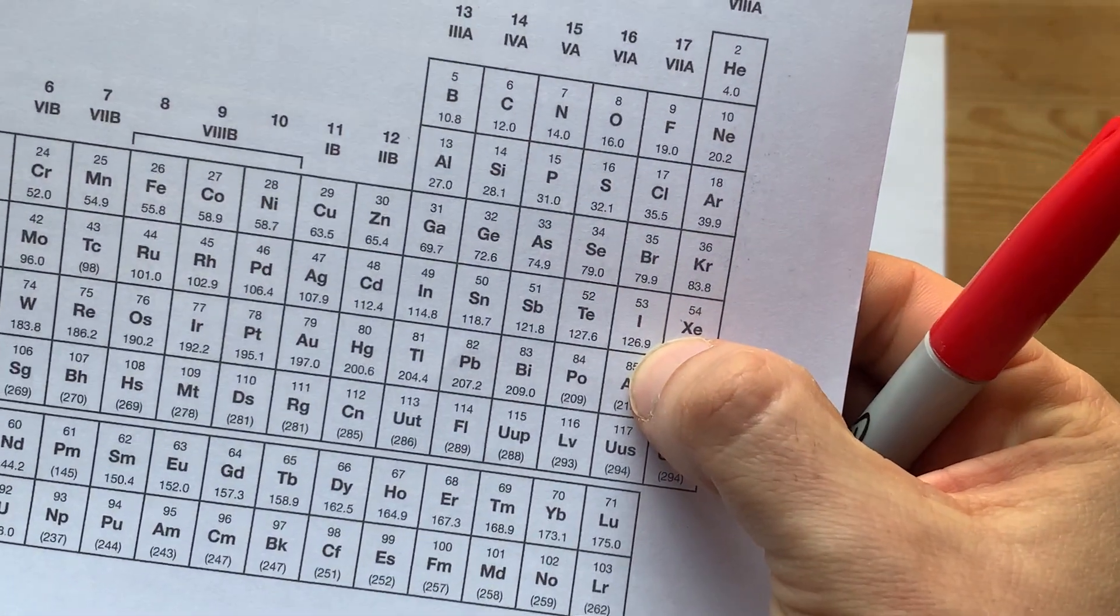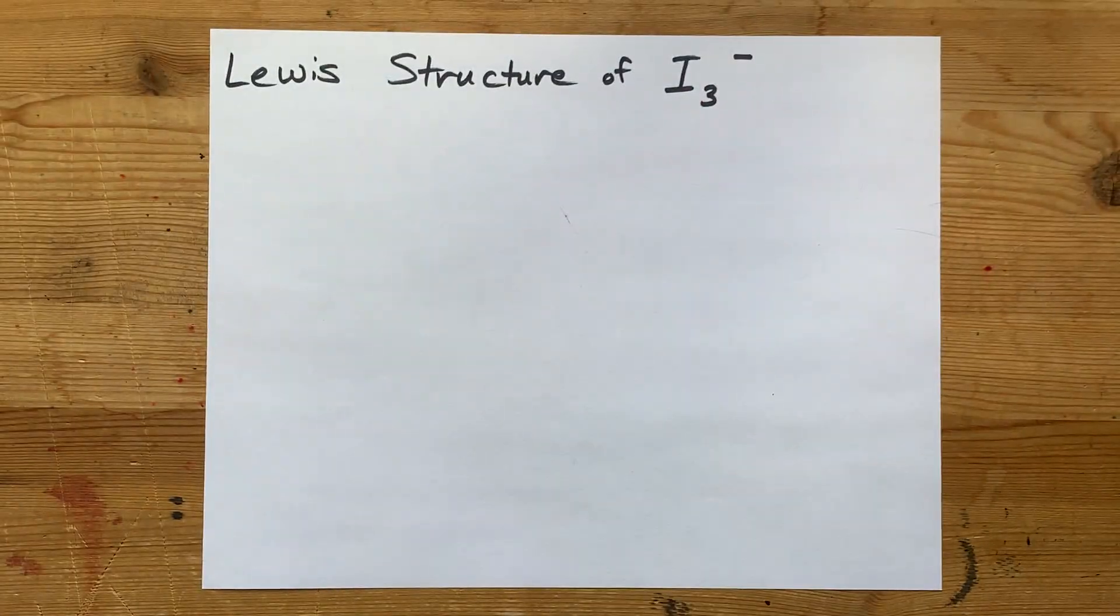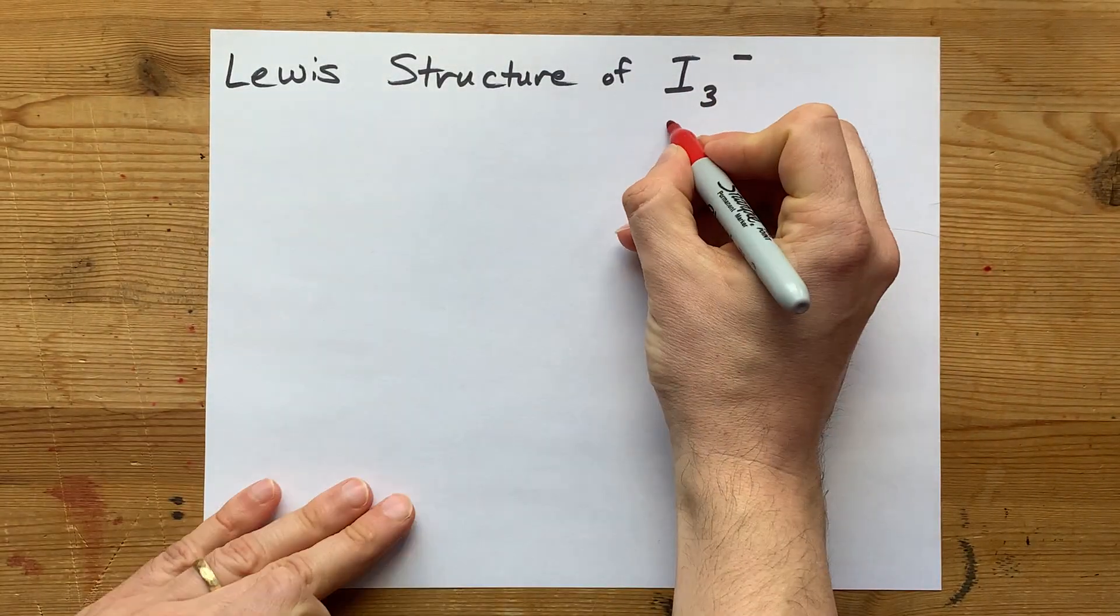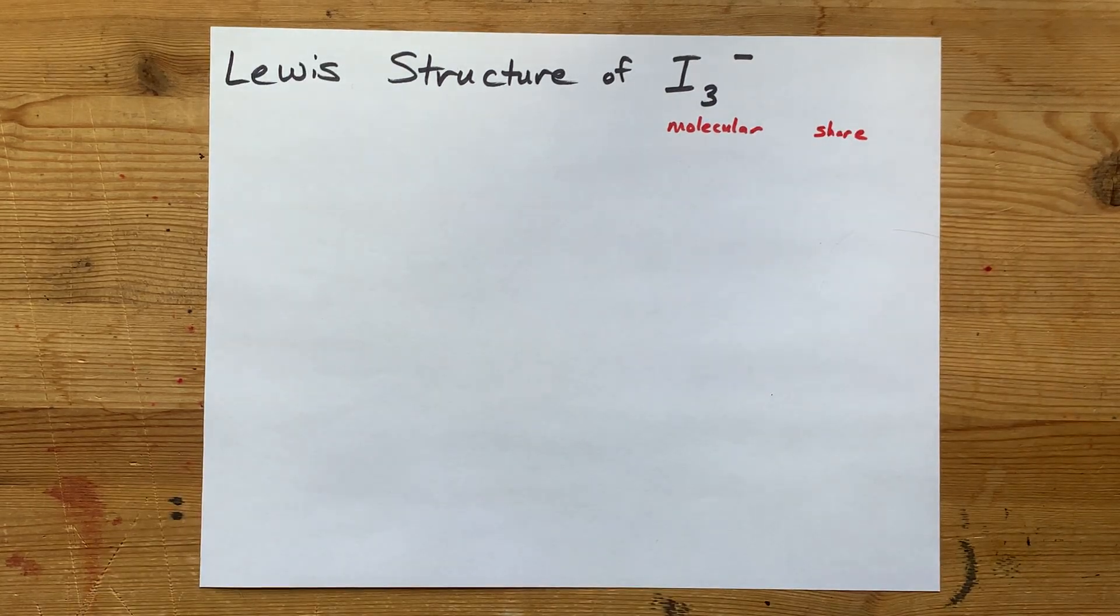We're going to draw the Lewis structure for I3-, which is three iodine atoms with an extra negative charge. First thing I want to point out is that iodine is a non-metal, and these are only iodine atoms, so together they're going to form a molecular structure. I know the structure itself is an ion, but it's going to be covalent bonds holding it together—iodines sharing electrons with each other, as opposed to transferring them from one iodine to another.